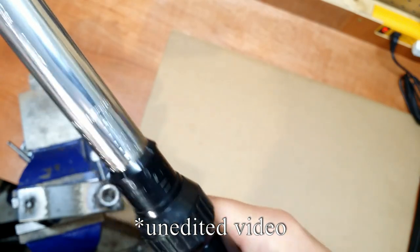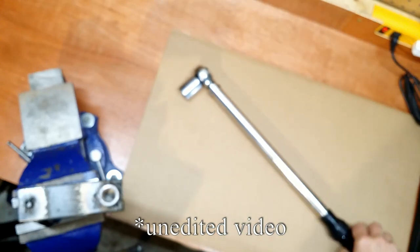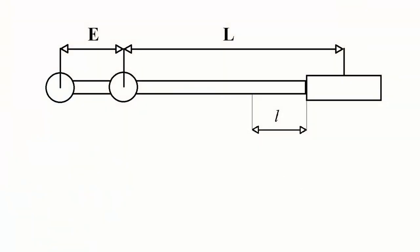Let's see how we can calculate the torque changed by the extension. Here we have a torque wrench where L is its length measured from the middle of the handle where the force is applied to the middle of the head.